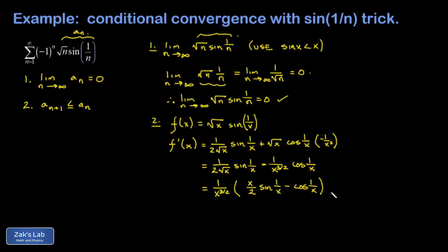Now we're trying to figure out if that expression in parentheses is less than 0 or not. Again, we're going to use this upper bound on the sine function. The expression I'm looking at is going to be less than 1 over x to the 3 halves times x over 2 times 1 over x, because sine 1 over x is less than 1 over x, minus cosine 1 over x.